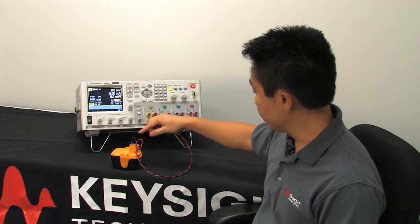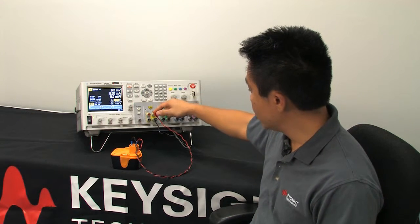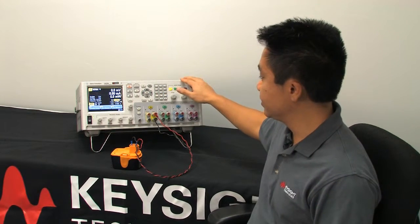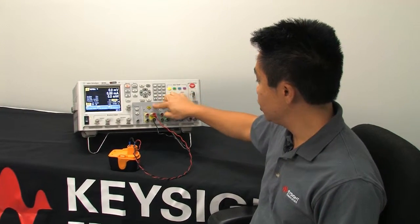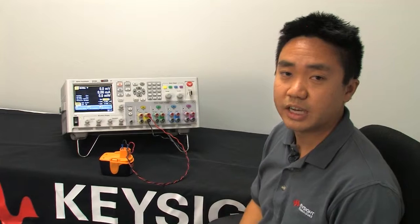I got a set of wires running from the battery to channel one of our N6705B DC power analyzer. And inside channel one is our N6785A source measure unit.